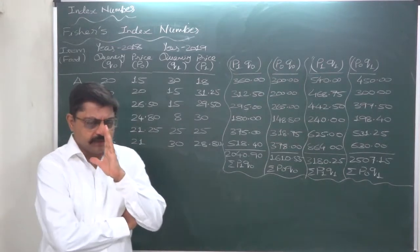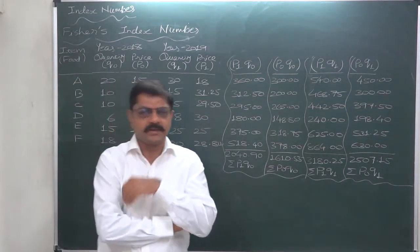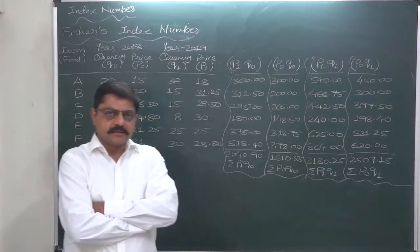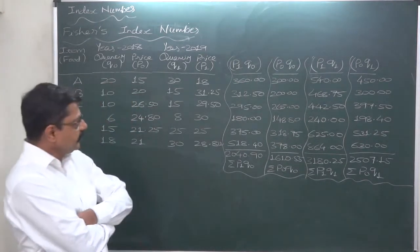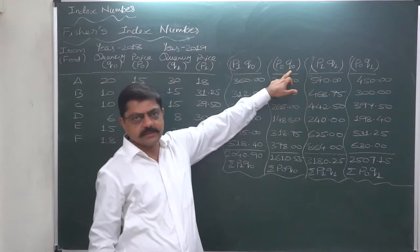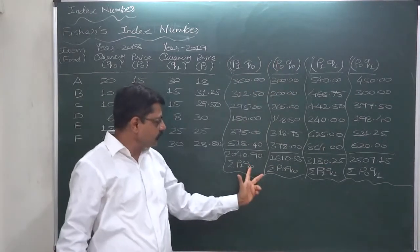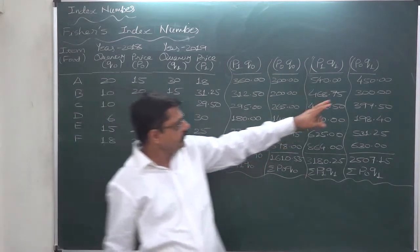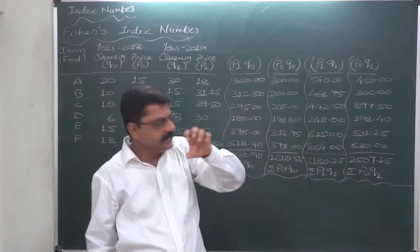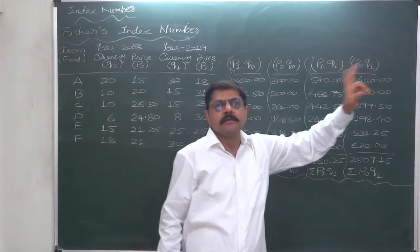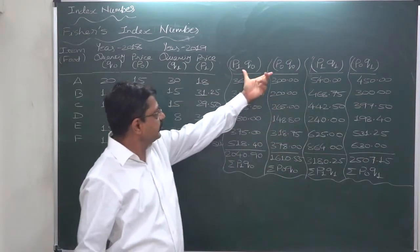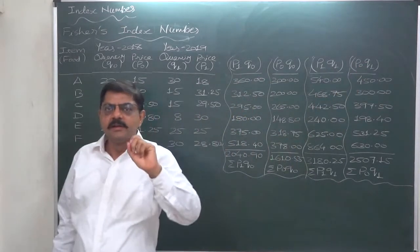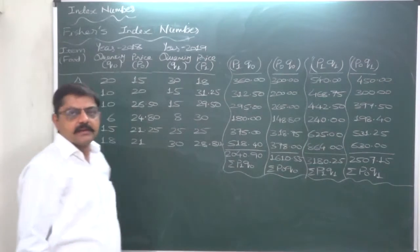Let's briefly rethink about Laspeyre and Paasche — the index numbers suggested by them. The main highlight of Laspeyre's index number is considering the quantity of the base year, while in Paasche's case, the highlight is considering the quantity of the current year. Those are the key points.